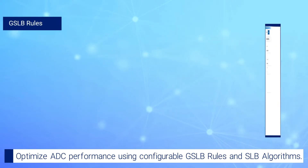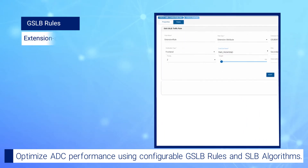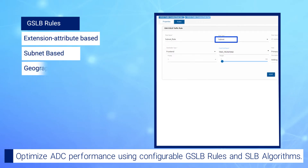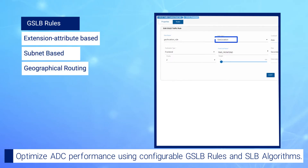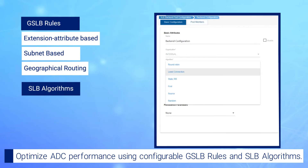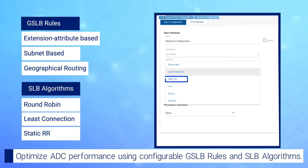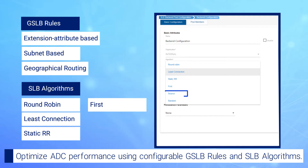The GSLB rules include extension attribute-based, subnet-based, and geographical routing. The supported SLB algorithms are round-robin, least connection, static resource record, first, source, and random.